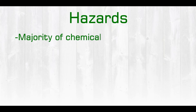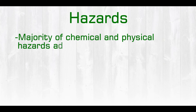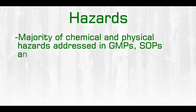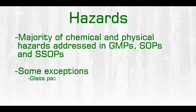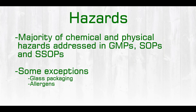The majority of chemical and physical hazards, unlike biological, will be addressed within the prerequisite programs such as GMPs, SOPs, or SSOPs. Exceptions to this would be if we have a product that is packaged in glass or a glass jar — the physical hazard of glass should be addressed within the HACCP plan. Additionally, allergens may or may not be part of the HACCP plan depending on how the HACCP program is set up.